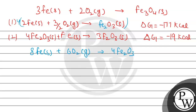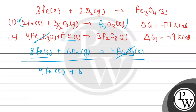Now we will add the second reaction to this. After addition, we get iron: 1 from the second reaction and 8 from the first gives 9 iron. The Fe₂O₃ terms cancel each other out. Plus 6 O₂, and this leads to the formation of 3 Fe₃O₄ solid — with a correction: it is Fe₃O₄, not Fe₃O₃.